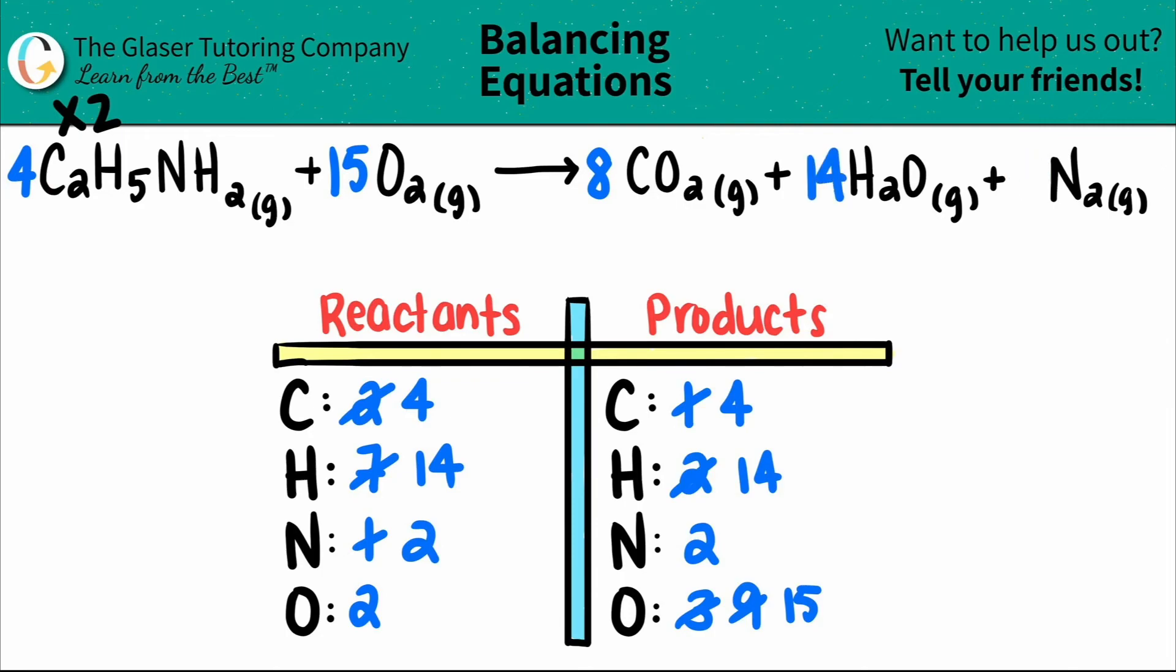And now there was no number here, but that's a secret one. Two times one is just a two. And now everything should be balanced. So the final balanced equation would be four C2H5NH2s plus 15 O2s yield eight CO2s plus 14 H2Os plus two N2s.